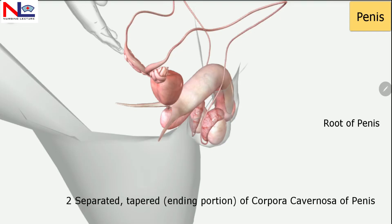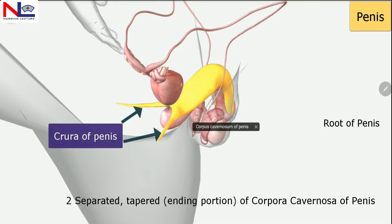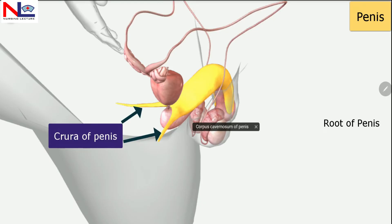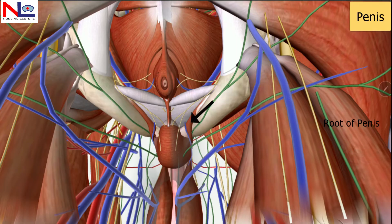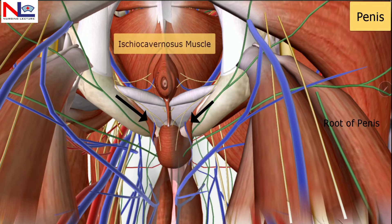The two separated tapered ending portions of the corpora cavernosa of the penis are the crura of the penis. These extend laterally away from the bulb of penis to attach with the ischium, and are surrounded by the ischiocavernosus muscle.